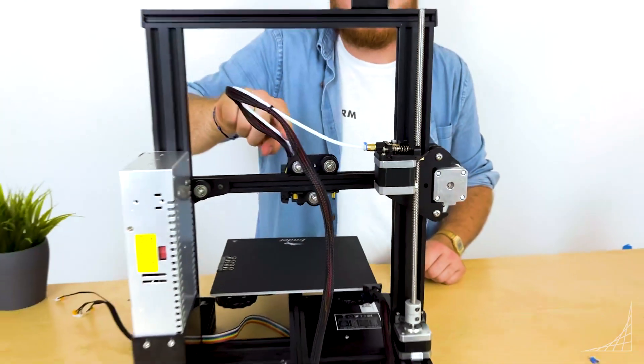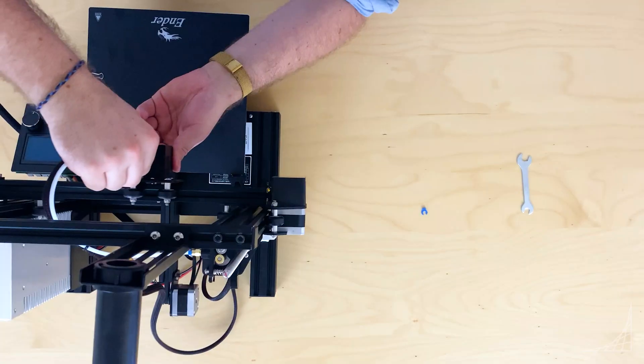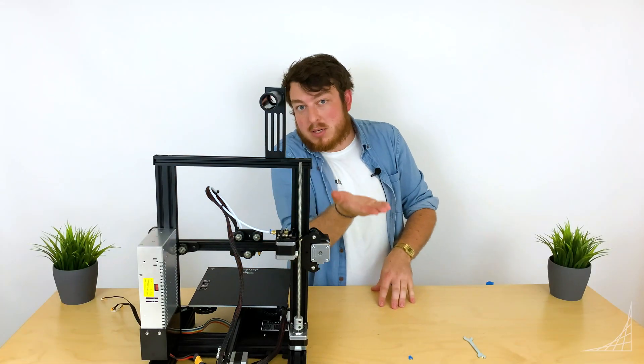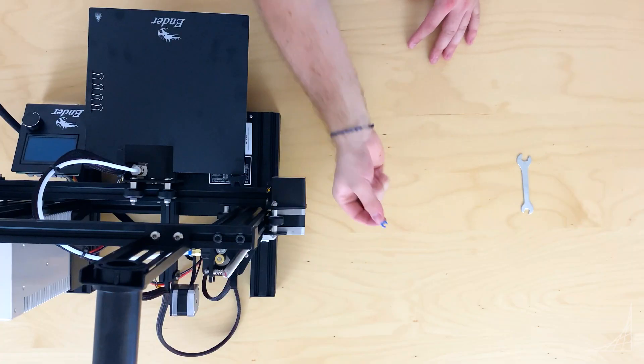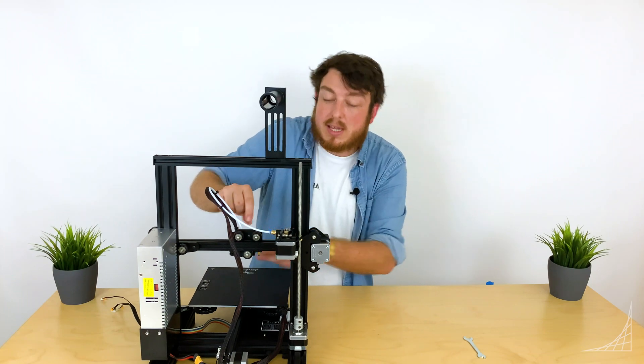We also want to double check the hot end PTFE tube just by simply giving it a little wiggle and pushing down so there's no gap in between the underside of the PTFE tube and the top side of our nozzle. Then we can grab our little blue clip and insert it in there in the exact same way. It doesn't matter if you do it top or bottom.